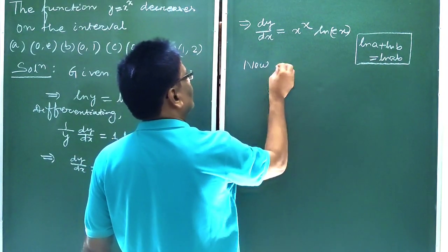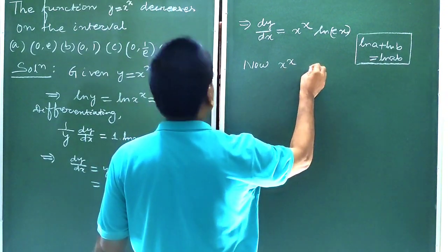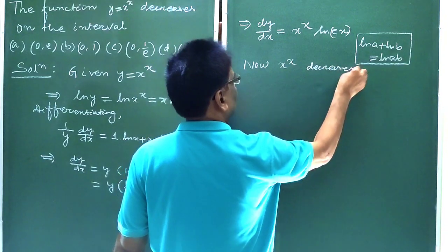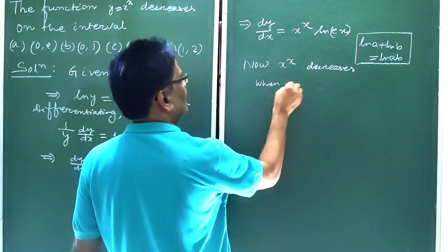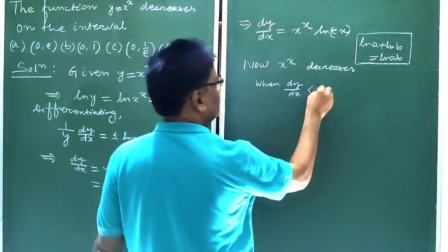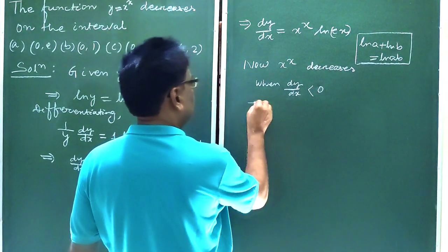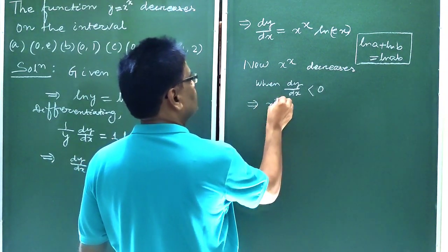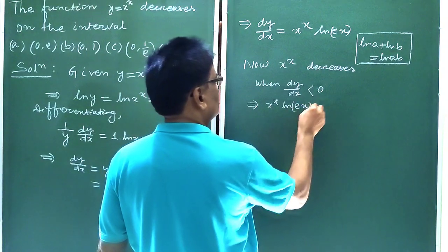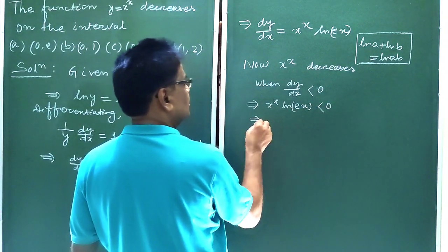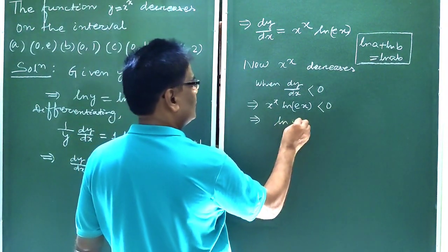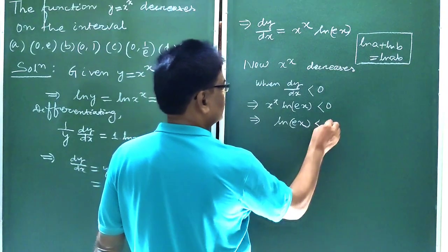Now, x to the power x decreases when dy/dx less than 0. So this implies x to the power x times ln(ex) less than 0.